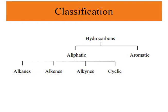On the other hand, we have unsaturated hydrocarbons, which contain one or more double or triple bonds. When we deal with double bonds, we are dealing with alkenes, and when we deal with triple bonds, we are dealing with alkynes. Sometimes when we deal with a ring, we call them cyclic compounds.